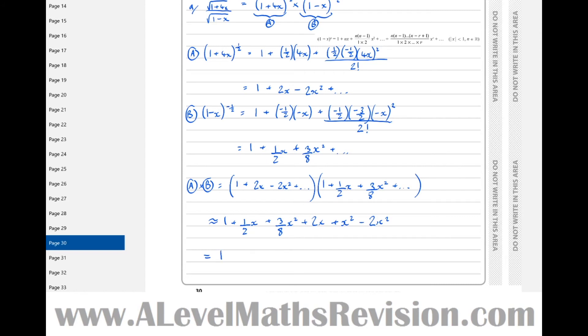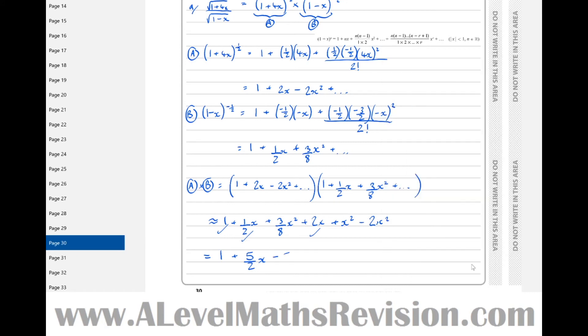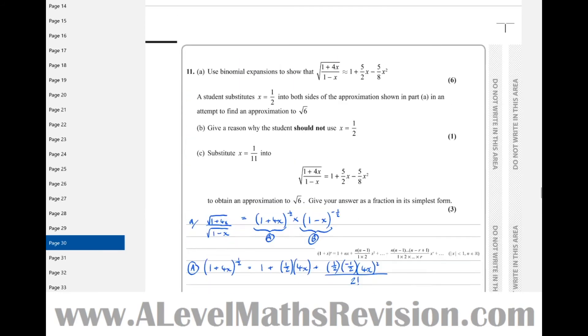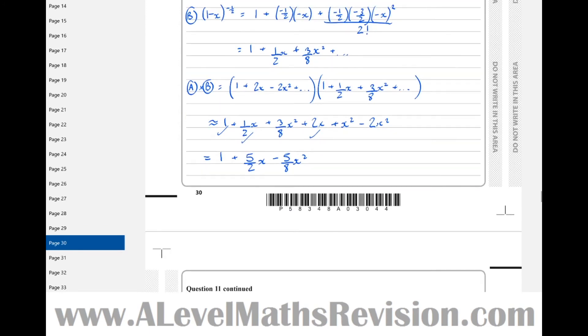So we've got 1, then 2x, add 1 half x, so that's 5 over 2x. Then we've got 3 eighths plus 1, x squared, take 2x squared. So let's do that in the calculator. 3 eighths plus 1, take 2, is minus 5 eighths x squared. Let's just check that that's equal to what we said it was going to be equal to. Yes, it certainly is. OK, so therefore we know we've got that right.